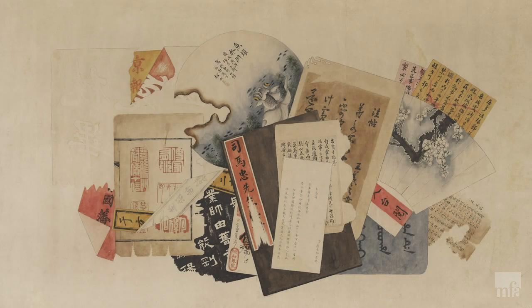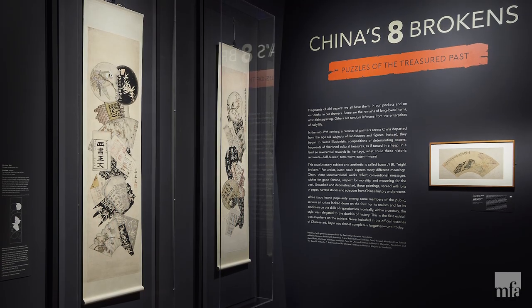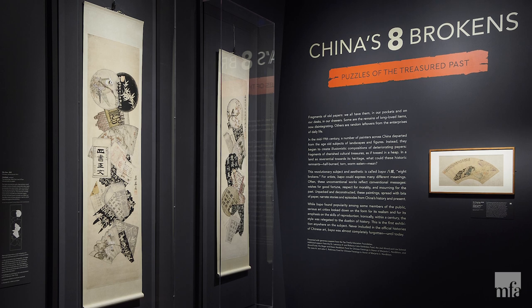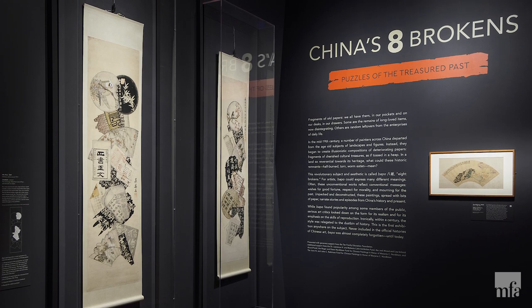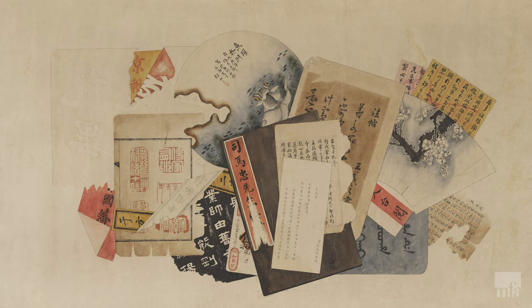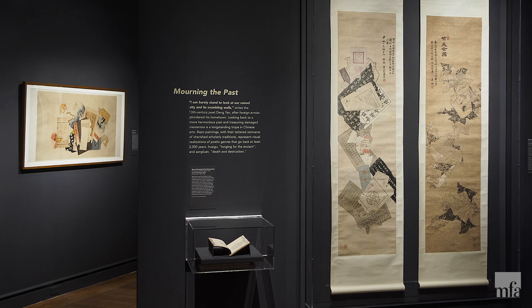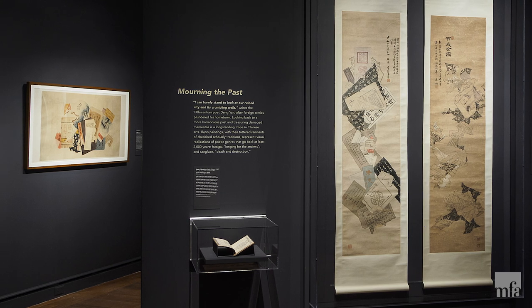Our work of inspiration today is a Chinese artwork which was shown at MFA Boston in the 2017 exhibition called Chinese Eight Brokens. This painting unfortunately doesn't have a name — it's an anonymous famous painting dated 1900, ink and color on paper. This painting was part of the exhibition that has something to do with the Chinese Bapo painting tradition.